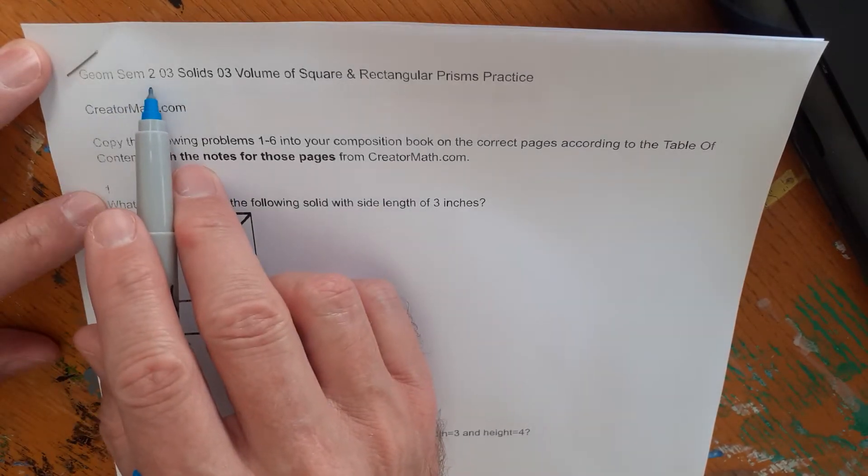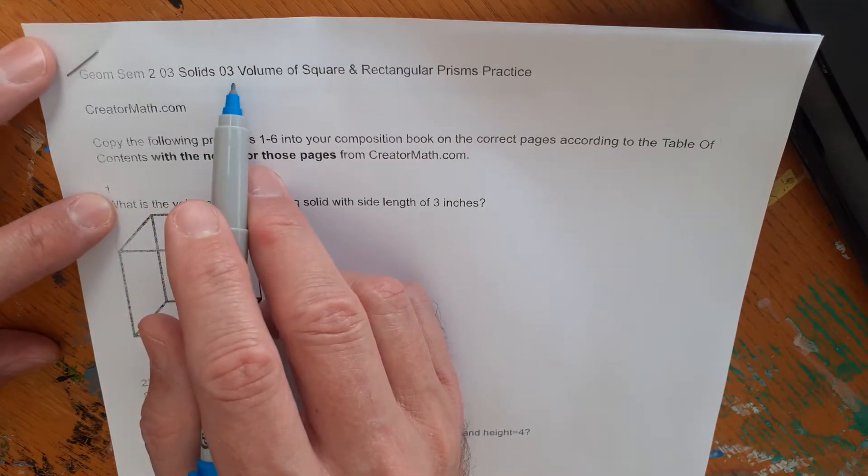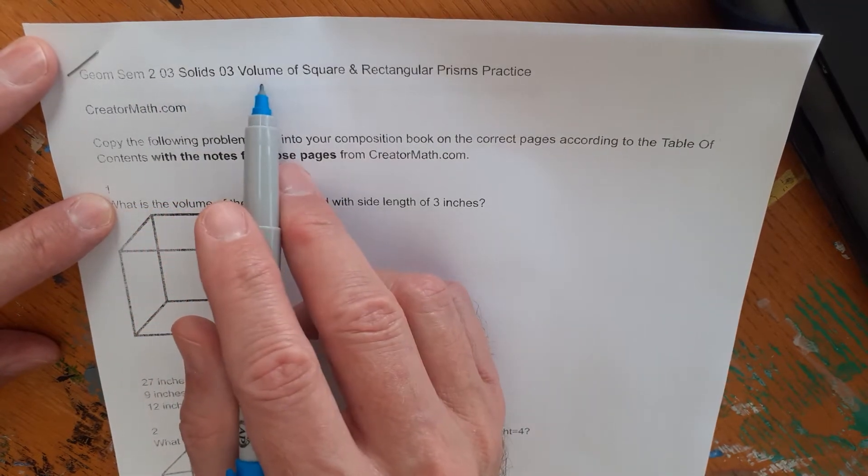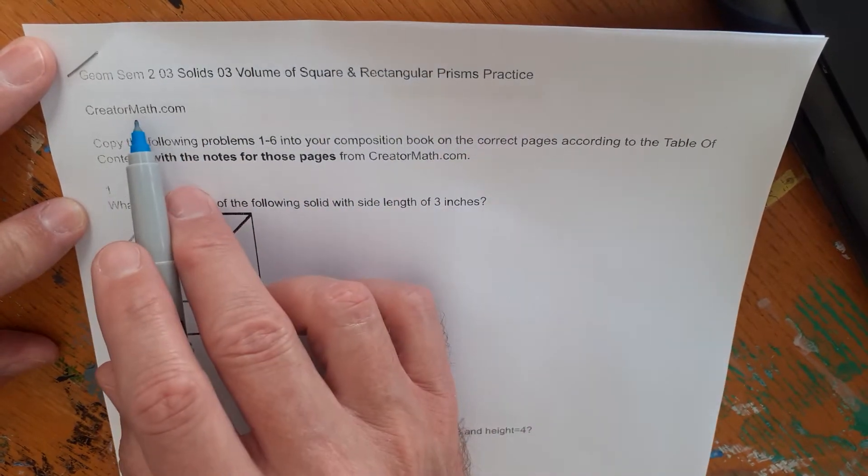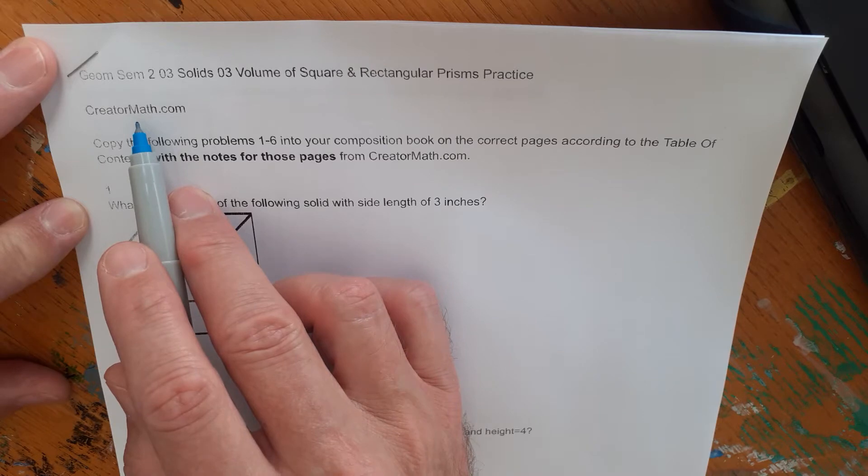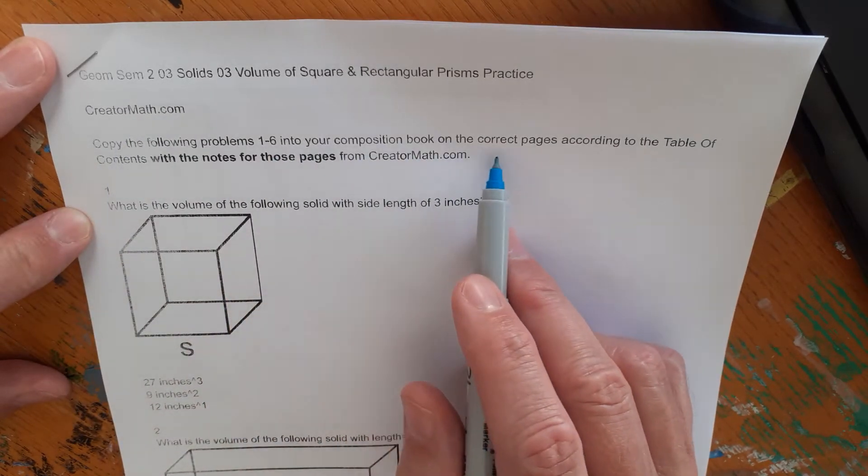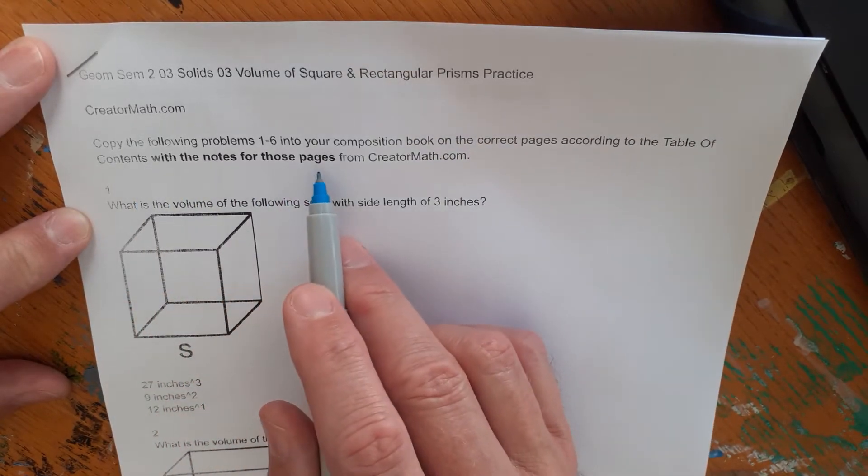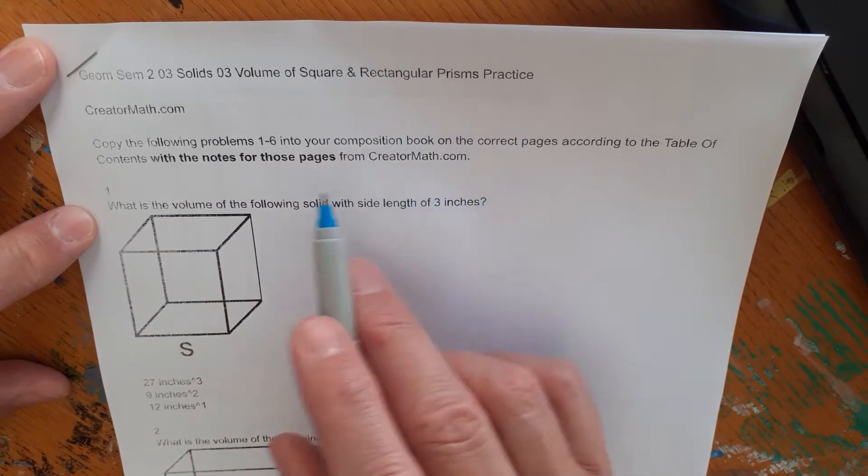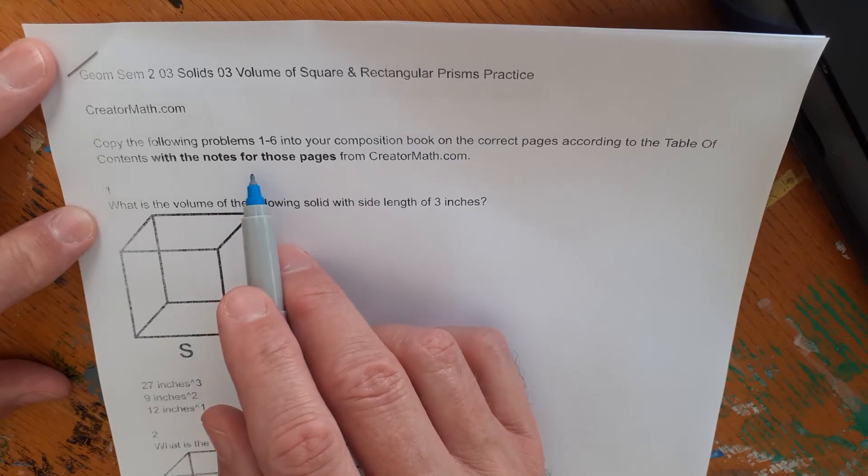This is Geometry semester two, the third unit called solids, and it is the third lesson called volume of square and rectangular prisms practice. It's on creatormath.com under the geometry tab. Copy the following problems one through six into your composition book on the correct pages according to the table of contents with the notes for those pages from creatormath.com. Make sure you're getting the notes.